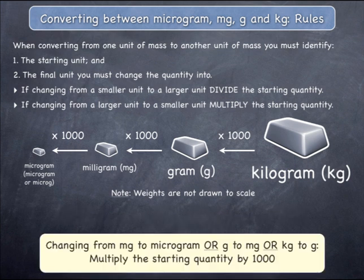In these last three examples, a quantity has been changed from a larger unit into a smaller unit. The information in the yellow box summarizes the rule that was applied.